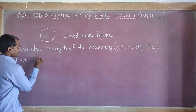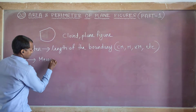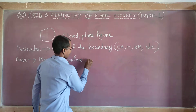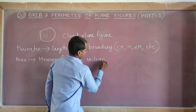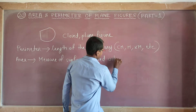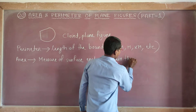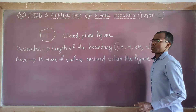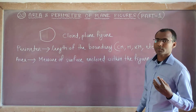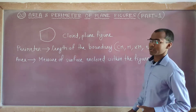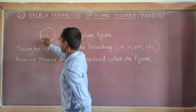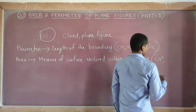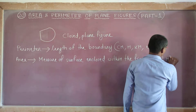Area means the measure of the space enclosed within the figure — how much surface has been enclosed inside the figure. That is called area. It is measured in square centimeters, square meters, etc.